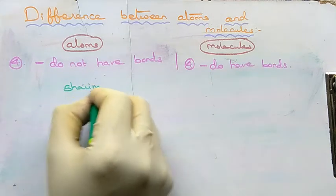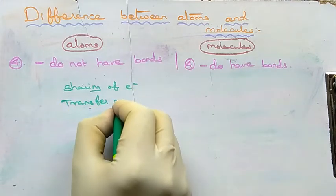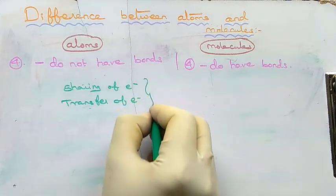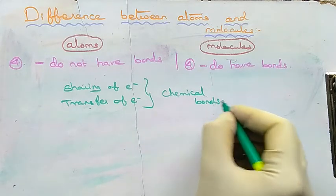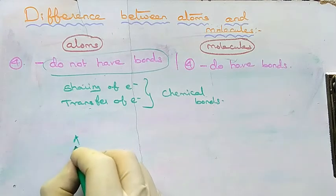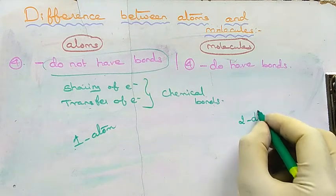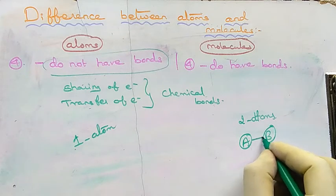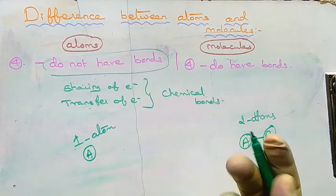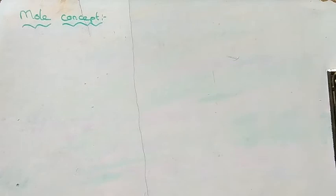Fourth difference: atoms do not have bonds, whereas molecules do have bonds. Chemical bonds are formed either by sharing of electrons or by complete transfer of an electron from one atom to another. A chemical bond is a force that holds atoms together. To form a chemical bond at least two atoms are needed, so a single atom cannot have any bond.